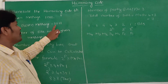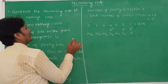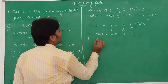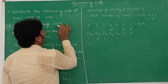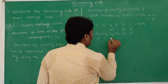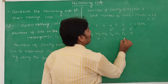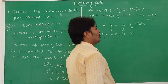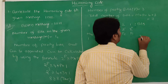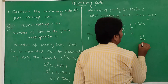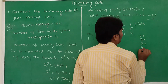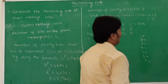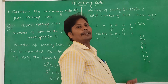The message bits are 1, 0, 1, 1. The MSB is written first: M4=1, M3=0, M2=1, and M1=1. Now we have to calculate P4, P2, and P1 bits. Before calculating these parity bits, we write the binary form of bit positions 1 through 7.